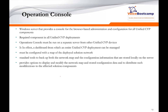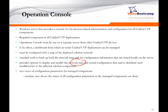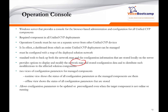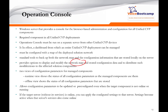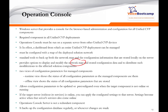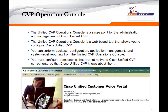The operation console provides options to display and modify the network mapping. It has two views: offline and online. The online runtime view shows all the configuration parameters and components in use. The offline view shows the status of all stored configuration views. It allows you to configure parameters and pre-configure them even when the target component is not online or running. If the target server is online, you can apply configuration settings to it, and those settings become active when the server services come online. It backs up the configuration database regularly or whenever a change is made. The operation console is GUI-based and accessed from a browser on the desktop.